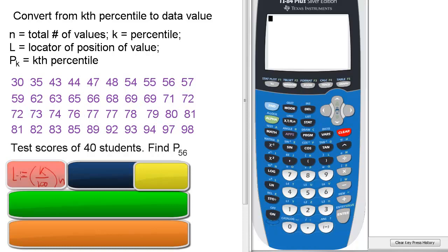Makes our job easier. l equals k over 100 times n. So in this case, l, the locator, will be 56 over 100 times 40 because k is the 56th percentile and n is 40, 40 students. So let's find that out.